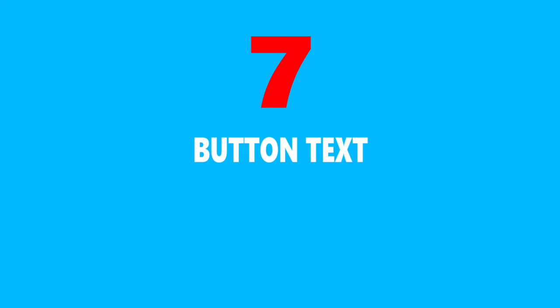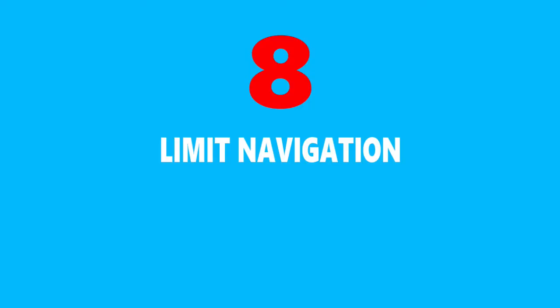Number seven is the button text itself. Stray away from boring button text such as 'click here' or 'sign up' — you need to make it more personal and inviting. Something like 'Yes, please, where do I start?' subconsciously means the visitor is agreeing to start, or 'Yes, please send me my PDF' — they are agreeing for you to send them that PDF.